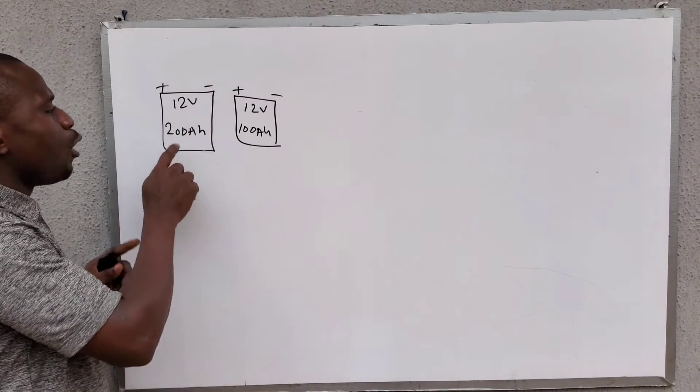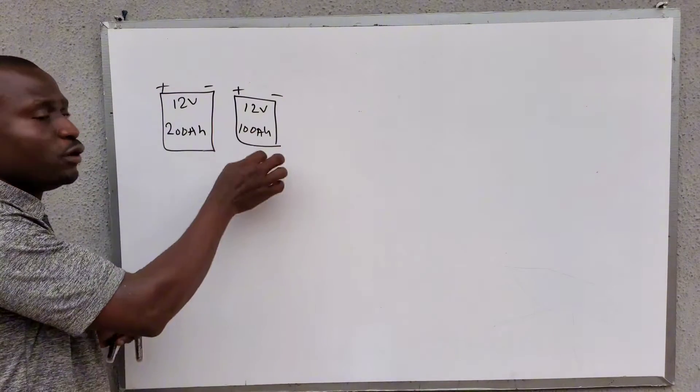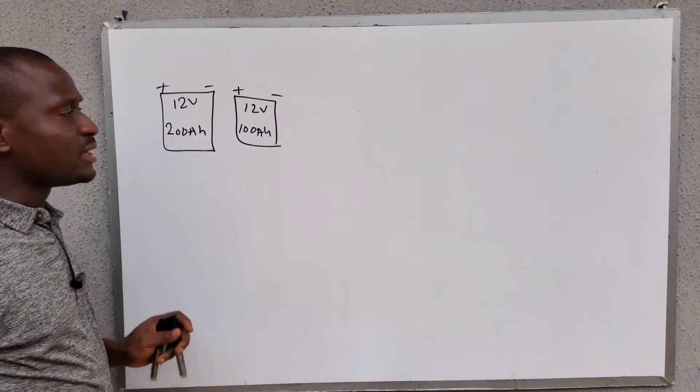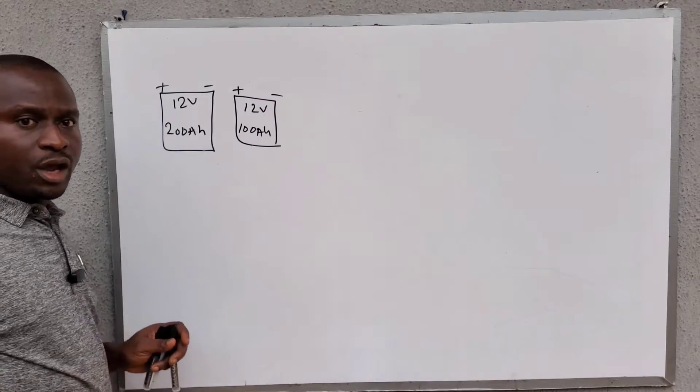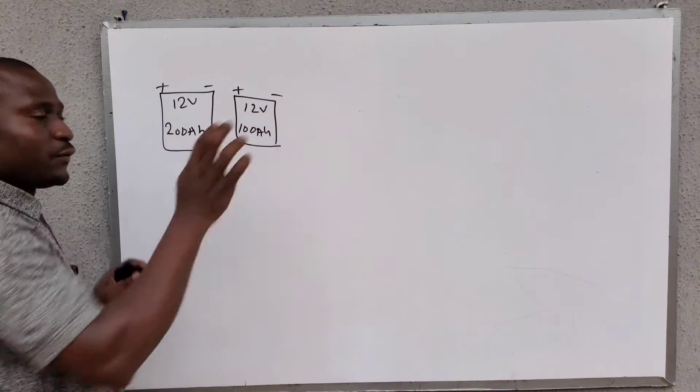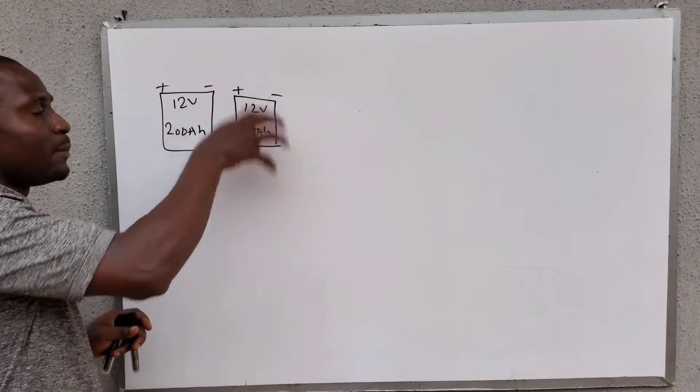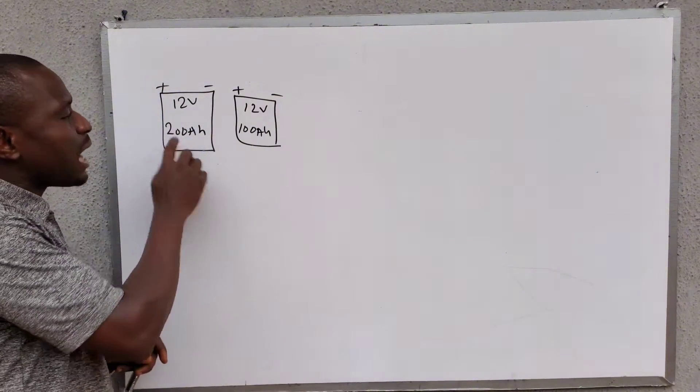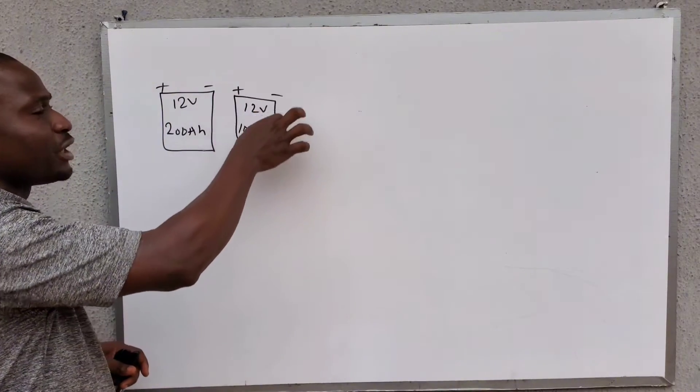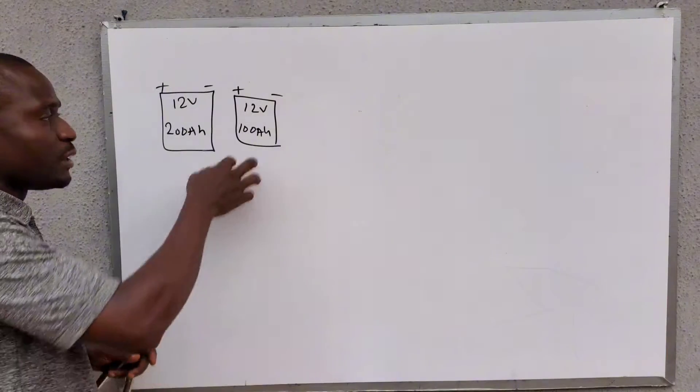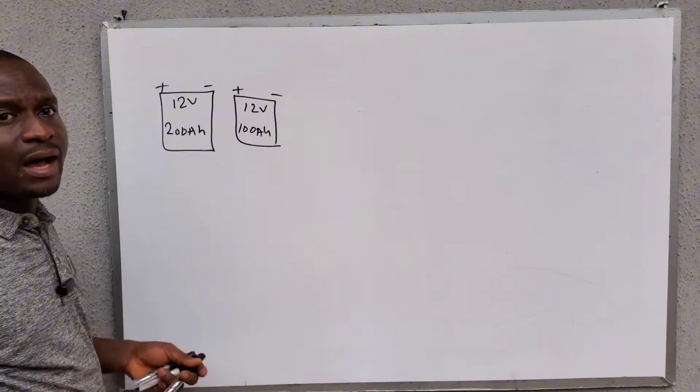Again, this 200Ah battery will never be fully charged. The reason is that the charge controller is always sensing the voltage of the smaller battery. So, once the smaller battery is fully charged, the charge controller will stop sending charge to the battery bank. Although, this 200Ah battery is not fully charged. But because the charge controller is sensing the voltage of the smaller battery, it will not charge the battery bank again. So, this 200Ah battery will never be fully charged.